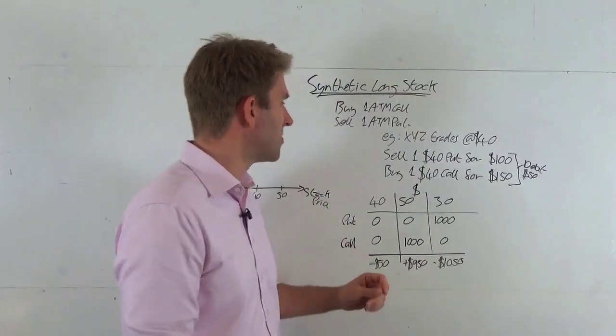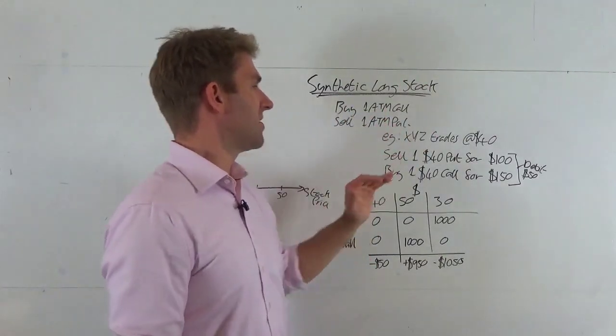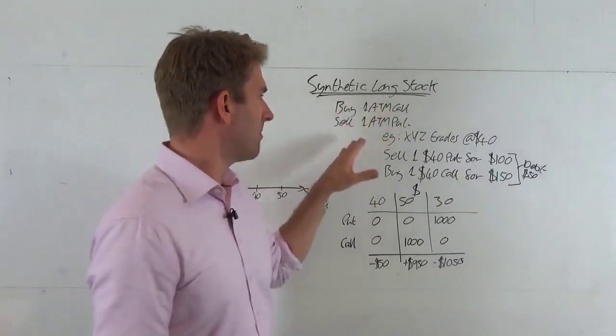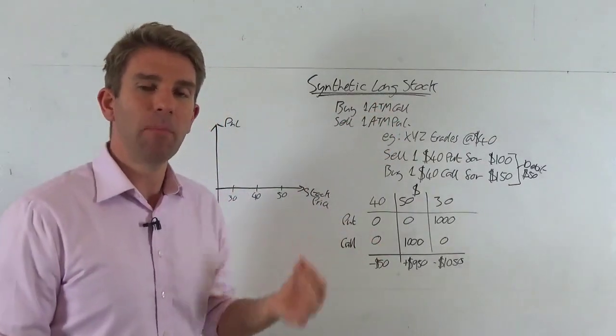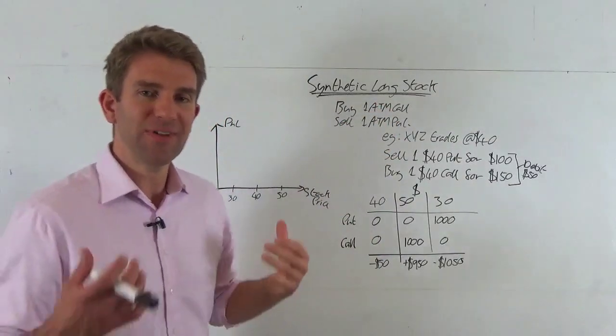To create a synthetic long stock, we would buy one at-the-money call and we'd sell one at-the-money put. In other words, we're kind of negating the premium but we're just having that naked value allowing us to make money if the stock goes up.